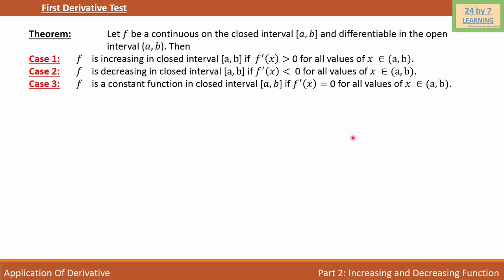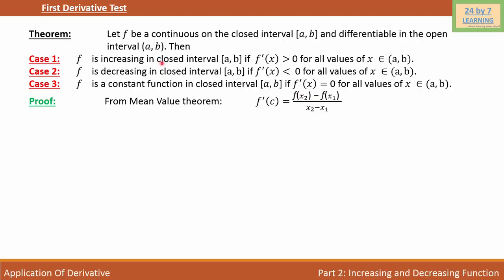In order to prove this theorem, I'm going to use the Mean Value Theorem. The Mean Value Theorem states: f'(c) = [f(x2) - f(x1)] / (x2 - x1). In other words, if a function f is continuous in the closed interval [a,b] and differentiable in the open interval (a,b), then there is a point c where the first order derivative exists.